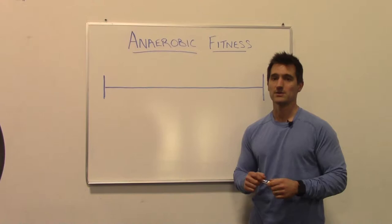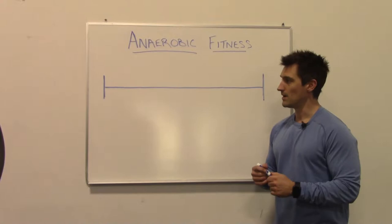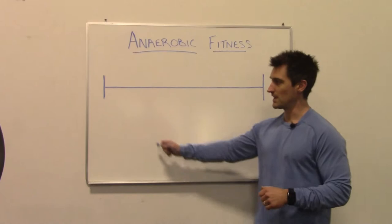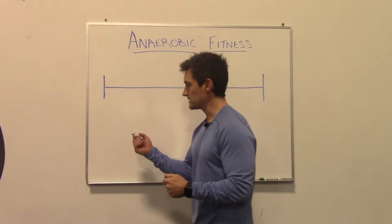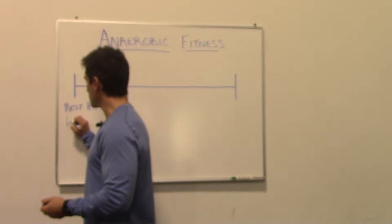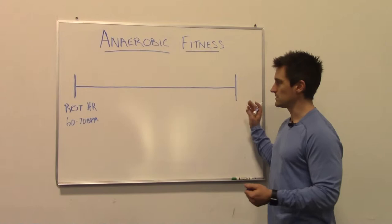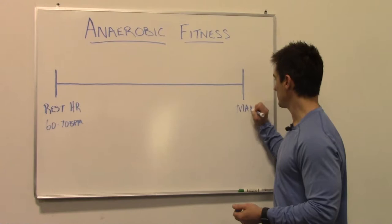We're gonna start by trying to describe anaerobic fitness through aerobic versus anaerobic. I'll use sort of a line of intensity. On this side of the line we're gonna call that your resting heart rate — that is your heart rate when you're not doing anything. You just wake up in the morning and take your heart rate without moving at all, and it's 60 to 70 beats per minute — just for example, because that's probably common. And on this side of the spectrum you have your maximum heart rate.